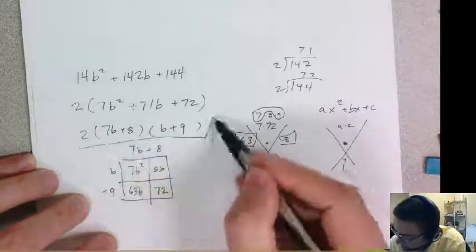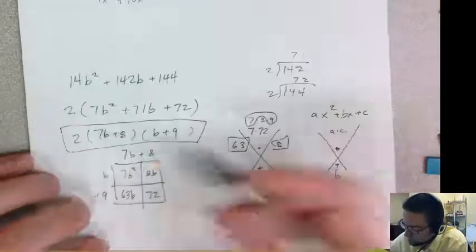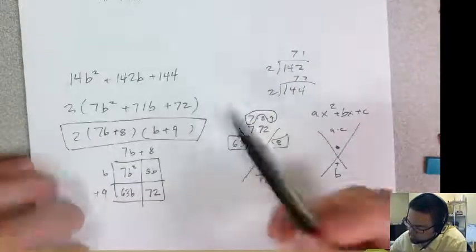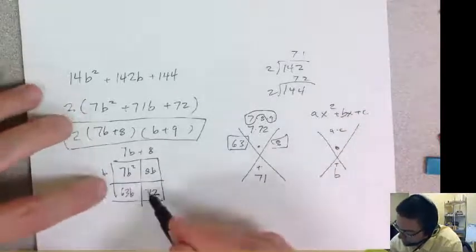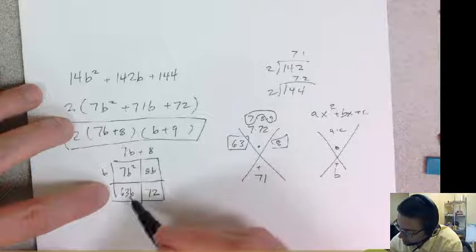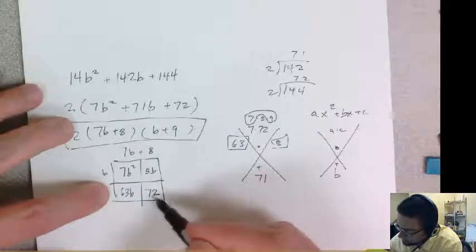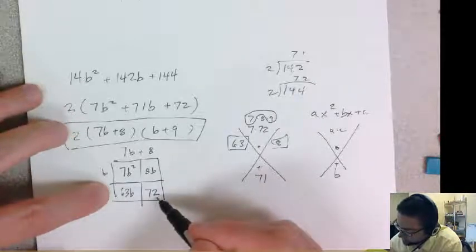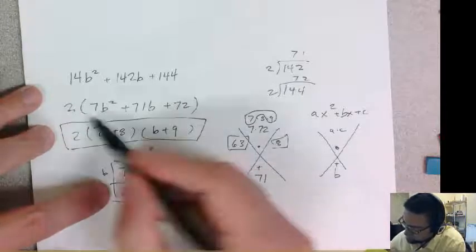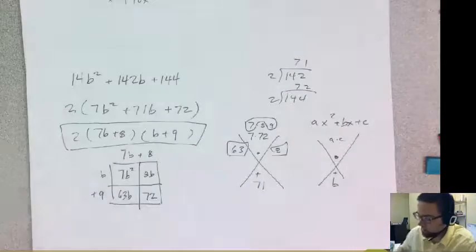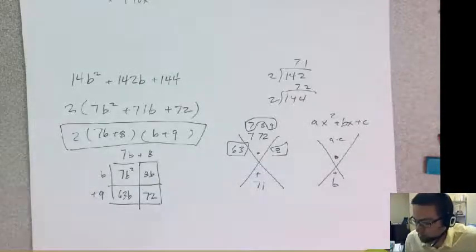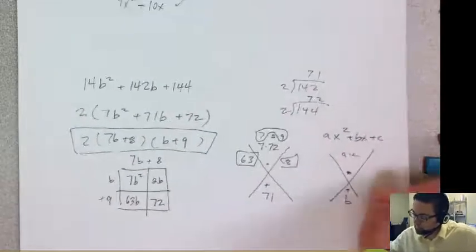And then the way you can check to see if you factored it the right way is multiply these last two together, does it equal 72? And it does. So my factor would be 7b plus 8 and b plus 9. So that is the factored form. And you can always multiply it out to check your answer. So that was a little bit more complicated.